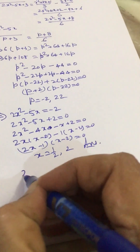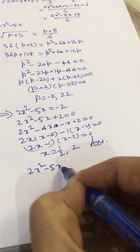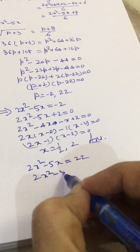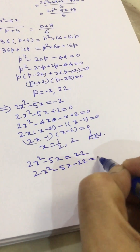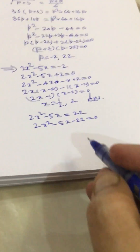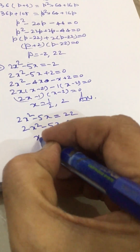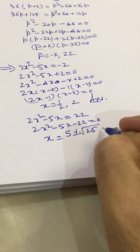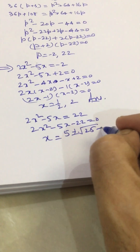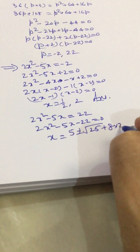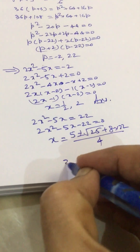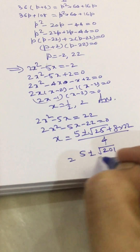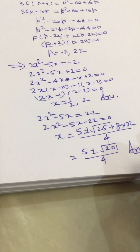Another answer we will get when 2x squared minus 5x equal to 22, or 2x squared minus 5x minus 22 equal to 0. Using the quadratic formula, we can write x equal to 5 plus or minus the square root of 25 plus 176, all divided by 4, which gives us plus or minus root 201 divided by 4. This is our another set of answers.